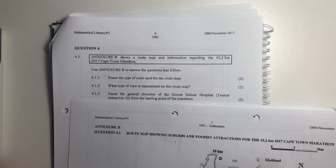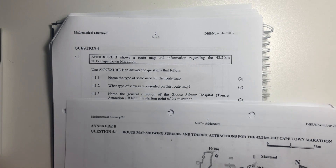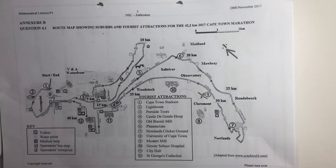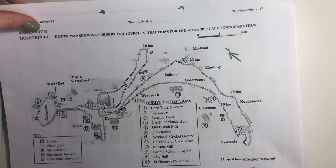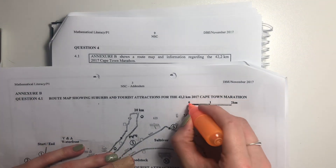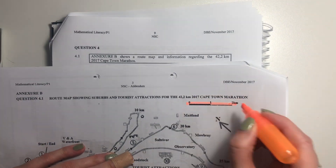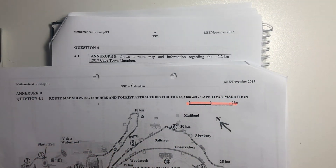It says, name the type of scale used for the route map. So let's see the scale. I'm going to use my highlighters. This here is our scale, and that is a bar scale.